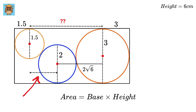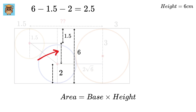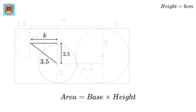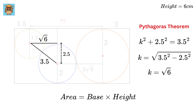We will find the next distance by considering the horizontal distance between the smaller circle and the middle circle. Construct another right triangle. This length will be 1.5, which is the radius of the smaller circle. The entire vertical distance is 6, and this part is 2, the radius of the middle circle, so this vertical height will be 6 minus 1.5 minus 2, which gives 2.5. The hypotenuse is the sum of the radii: 1.5 plus 2 equals 3.5. Let this horizontal distance be k. Using Pythagoras theorem: k² + 2.5² = 3.5², giving k = √6.